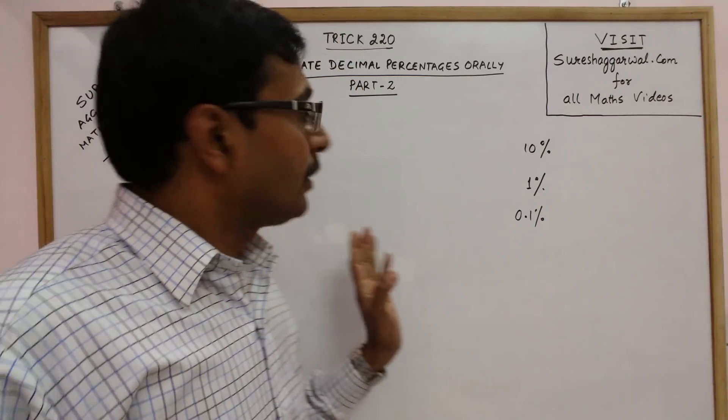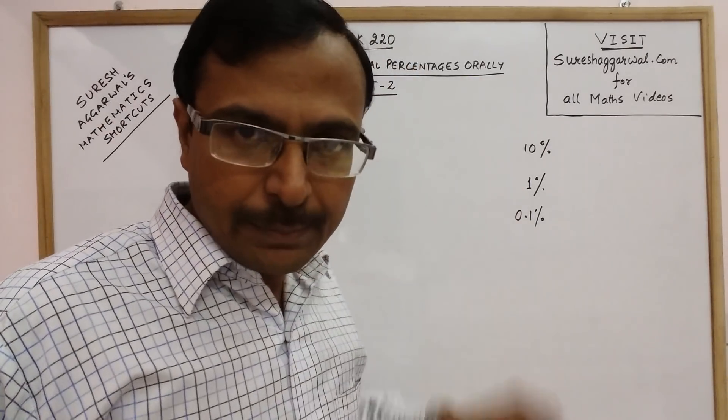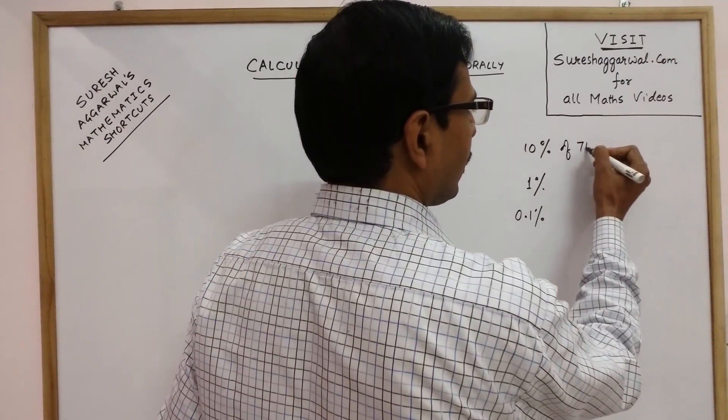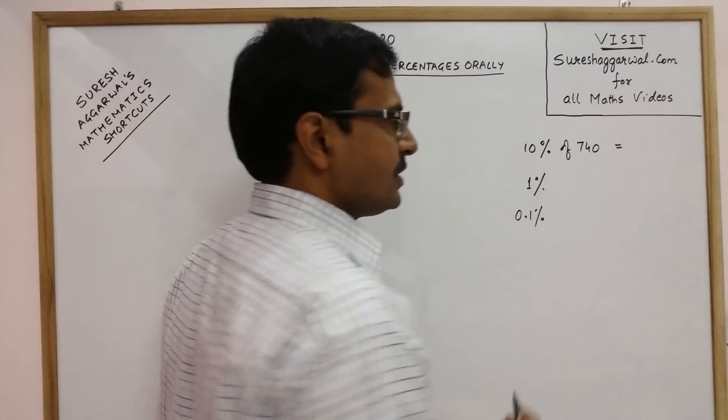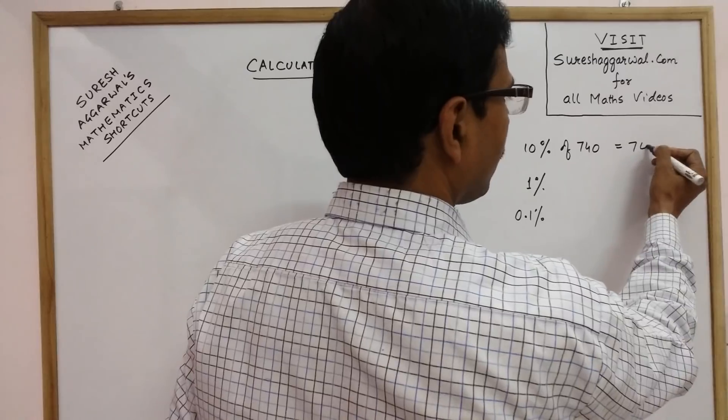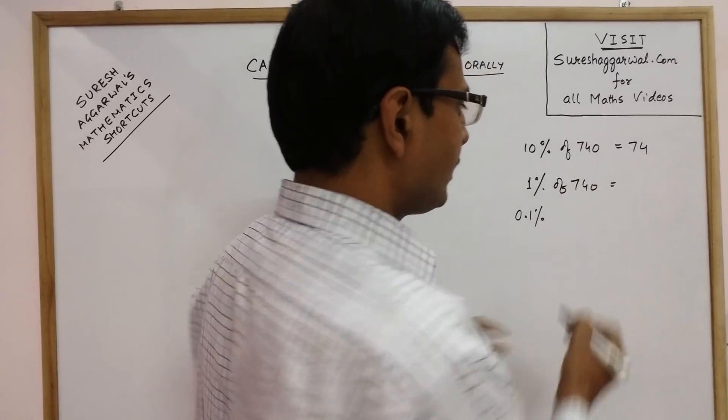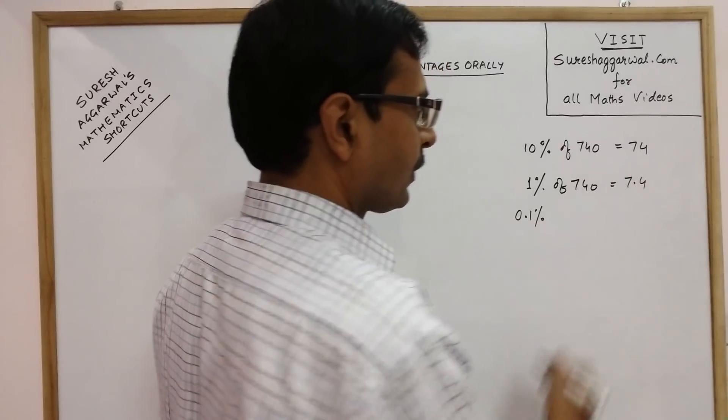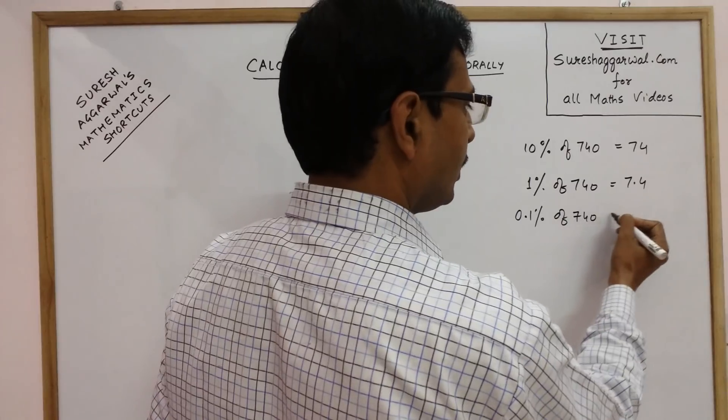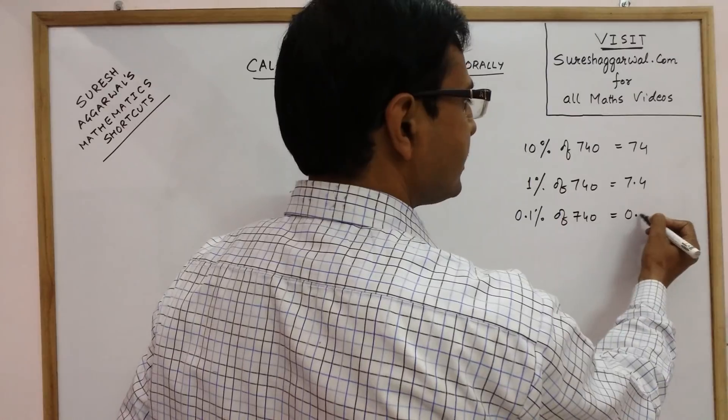Now for better understanding of this we need to again look into 10%, 1% and 0.1%. Now 10% of any number say 740 is just put a decimal one digit from the right side, it is 74. 1% put a decimal two digits from the right that is 7.4, and 0.1% put a decimal three digits from the right, so 0.74.